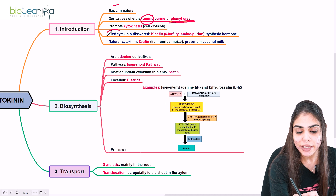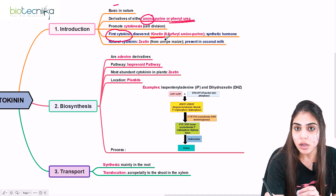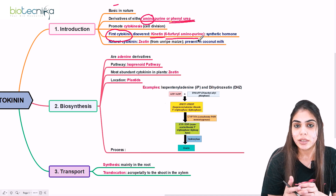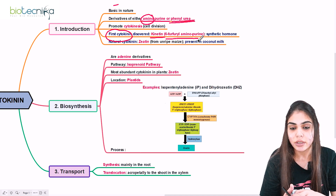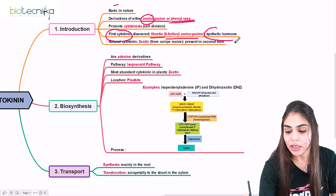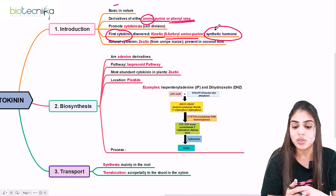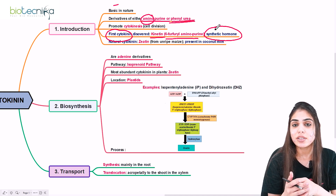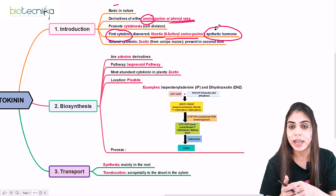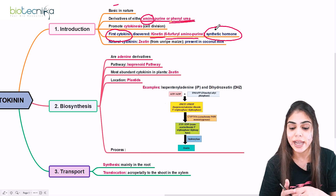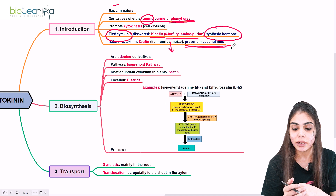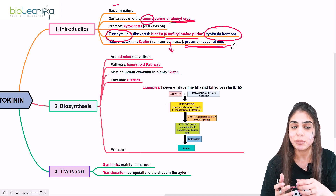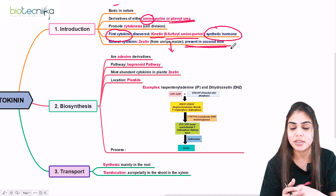The first cytokinin discovered was kinetin, also known as 6-furfurylaminopurine — this is an important exam question. Kinetin is a synthetic hormone. The natural cytokinin is zeatin, which was isolated from unripe maize (Zea mays), and hence the compound is called zeatin. It is also present in coconut milk. An important question: name the phytohormone present in coconut milk — it is zeatin.